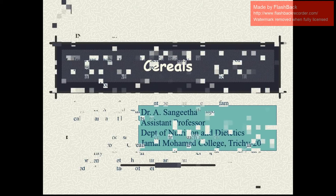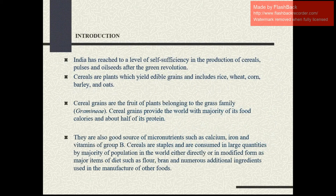Now I am going to talk about the cereals. This is the introduction part of the cereals. India has reached a level of self-sufficiency in the production of cereals, pulses and oil seeds after the Green Revolution. The cereals are the plants which yield edible grains and include rice, wheat, corn, barley and oats. The cereal grains are the fruit of plants belonging to the grass family. The cereal grains provide the world with the majority of its food calories and about half of its protein. They are also a good source of micronutrients such as calcium, iron and vitamins of B group. Cereals are the staple food and are consumed in large quantities in many ways, in the form of modified forms like flour, bran and numerous additional ingredients used in the manufacture of other products.